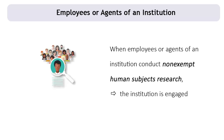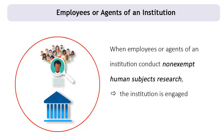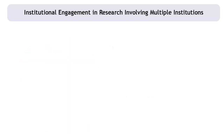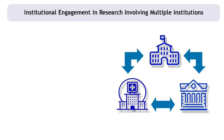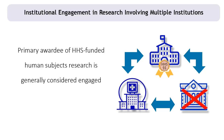When employees or agents of a single institution are conducting non-exempt human subjects research, the institution is engaged. The issue of engagement can be more complex when multiple institutions, or individuals from multiple institutions, work together on various aspects of a non-exempt human subjects research project. It is possible for some institutions to be engaged while others are not. In such cases, OHRP's position is that the primary awardee of the HHS funds to conduct non-exempt human subjects research in a multi-institutional project is generally considered to be engaged.